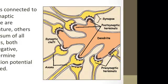Just because all those presynaptic neurons are colored yellow doesn't mean they're all the same type. Some of them might be dopamine receptors, some might be serotonin receptors, some might be norepinephrine receptors, et cetera. It's the sum total effect of all of these — whether enough stimulation is occurring such that it's going to pass through the threshold and perpetuate an action potential.